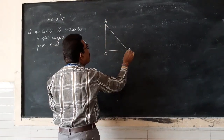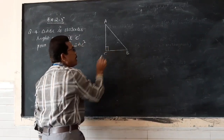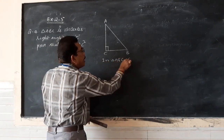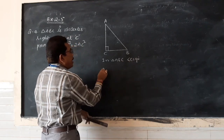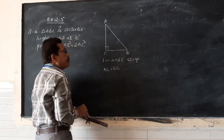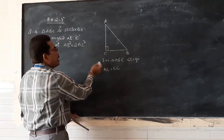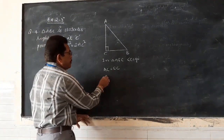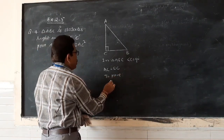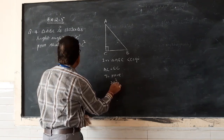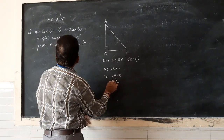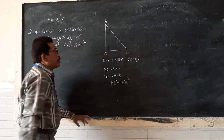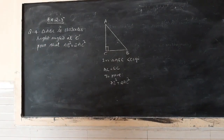In triangle ABC, angle C equals 90 degrees and AC equals BC, because triangle ABC is an isosceles triangle. We have to show that AB² = 2AC².